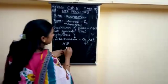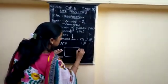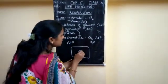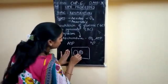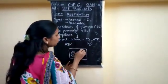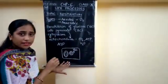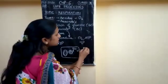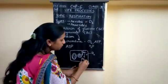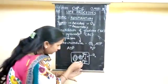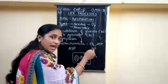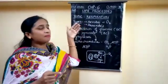Let me draw a diagram. This is a cell with cytoplasm, a nucleus, and a mitochondria. The glucose molecule in the cytoplasm is broken down into pyruvic acid or pyruvate. That pyruvate then enters the mitochondria, where it releases carbon dioxide, ATP, and H2O. This is what happens in aerobic respiration.